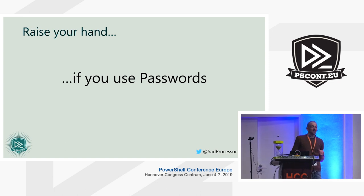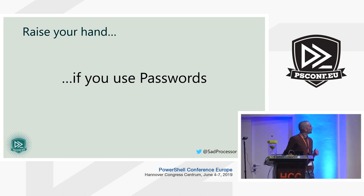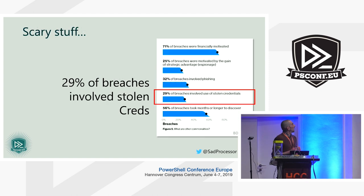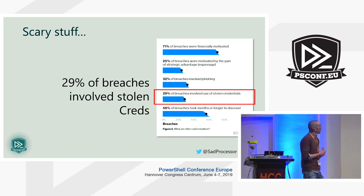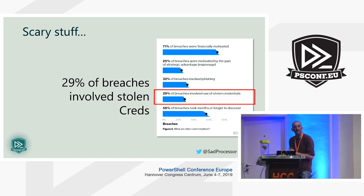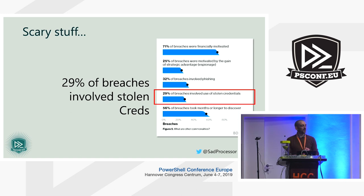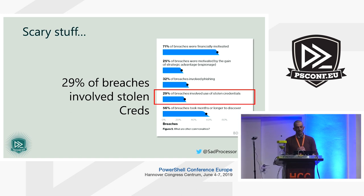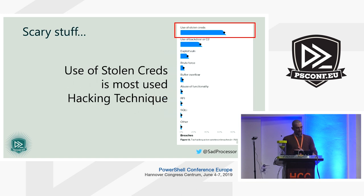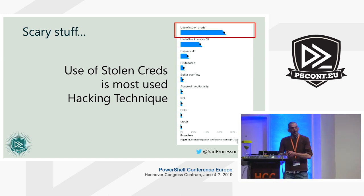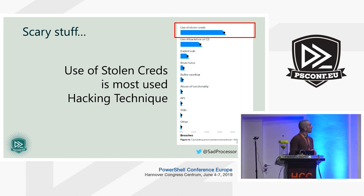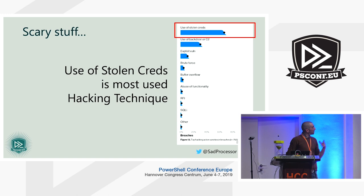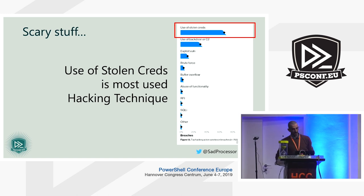29% of all breaches involve stolen credentials. This is to say again that we might think of zero-days and all kinds of exploits, but in reality it's very often simple credential reuse. Scary stuff. On top of the hacking activity — what does a hacker do? What a 'elite' hacker does is simply use stolen credentials. That's the most efficient way of hacking. All the rest — RFI, SQLi, buffer overflow exploits — it's way less predominant actually.